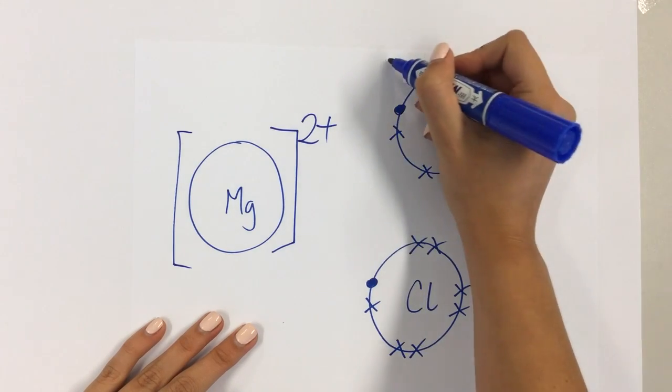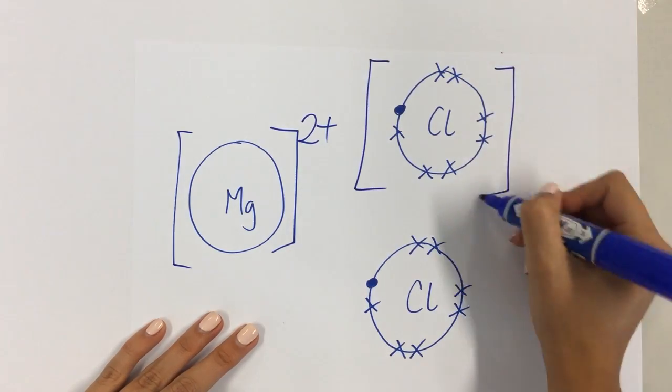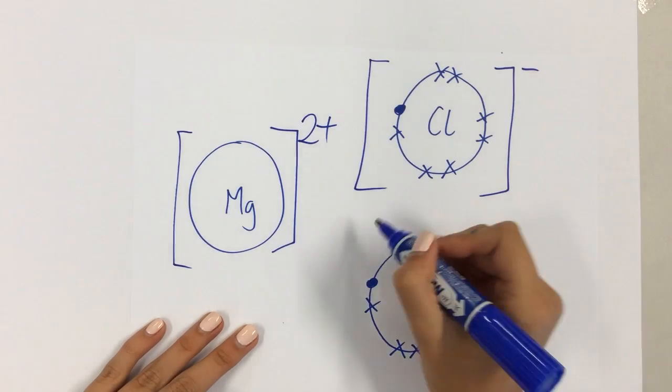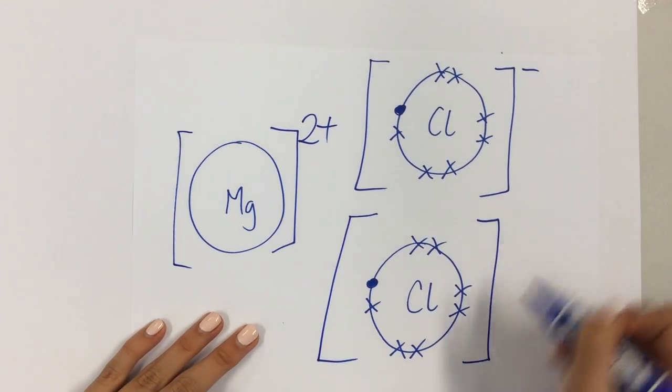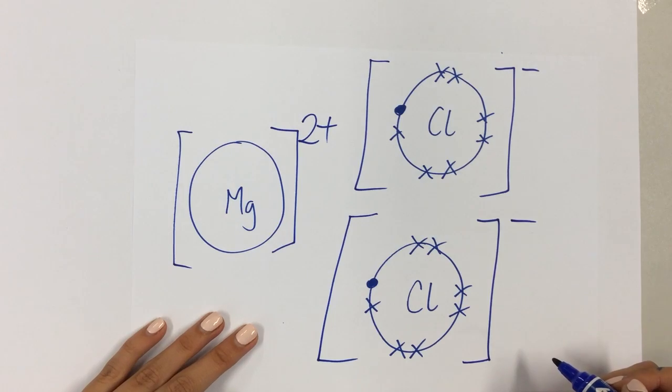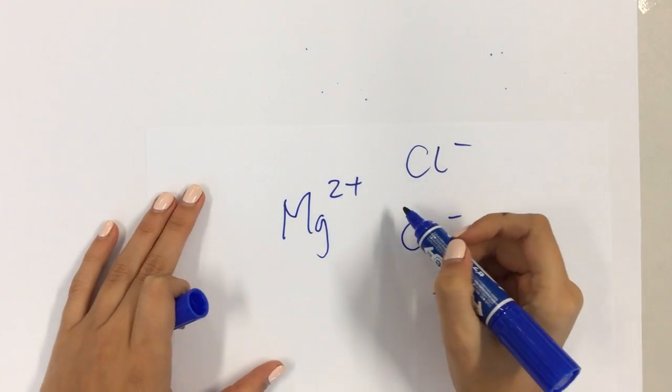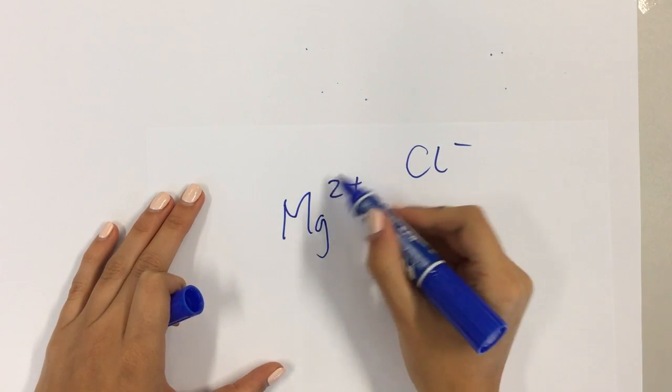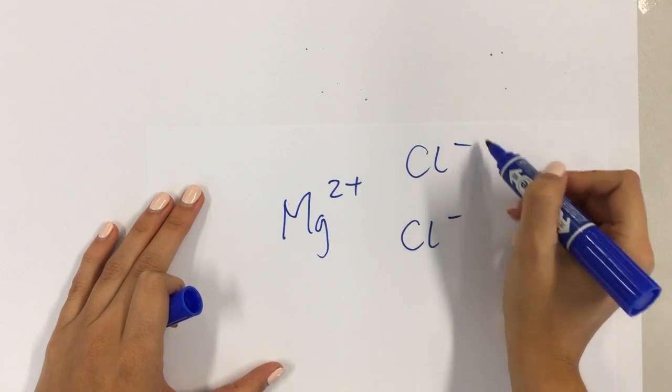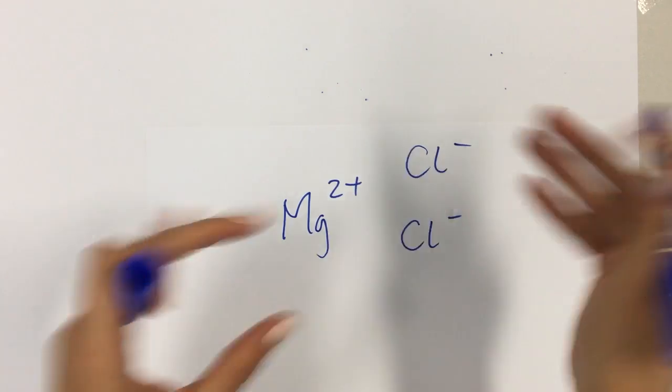Chlorine gained one electron, so forms a 1- or just a minus charge, and this one here also just forms a minus charge. You've got the electrostatic attraction holding the 2+ of the magnesium with the negative charge of the chloride. They have to stick together.